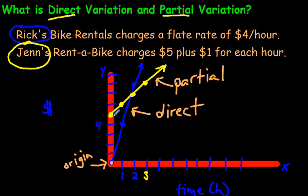Partial variation is when it does not start at the origin. It'll start somewhere else, usually up here. And it can move in any direction. The slope can be up, positive, or negative. But if it's starting from up here, and not starting at the origin, we call that partial variation.